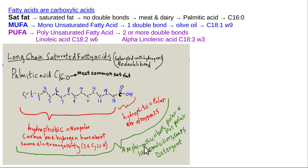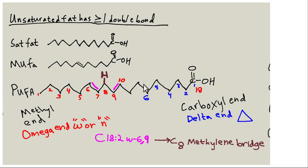Amphipathic means soluble partly in water and partly in oil — like an amphibian that can live on land and water. Things with both components can function as detergents or emulsifiers, meaning they can pull something from a lipid phase into the aqueous water phase. That's important to know about fatty acids in general.